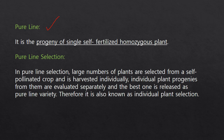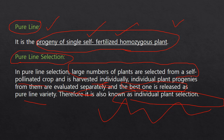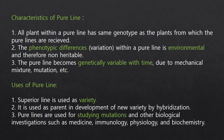A pure line is nothing but the progeny of a single self-fertilized homozygous plant — that is, the offspring of a single self-fertilized homozygous plant. Pure line selection is a method where a large number of plants are selected from a self-pollinated crop, harvested individually, and the individual plant progenies are evaluated separately. The best one is released as the variety, so it is also known as individual plant selection.